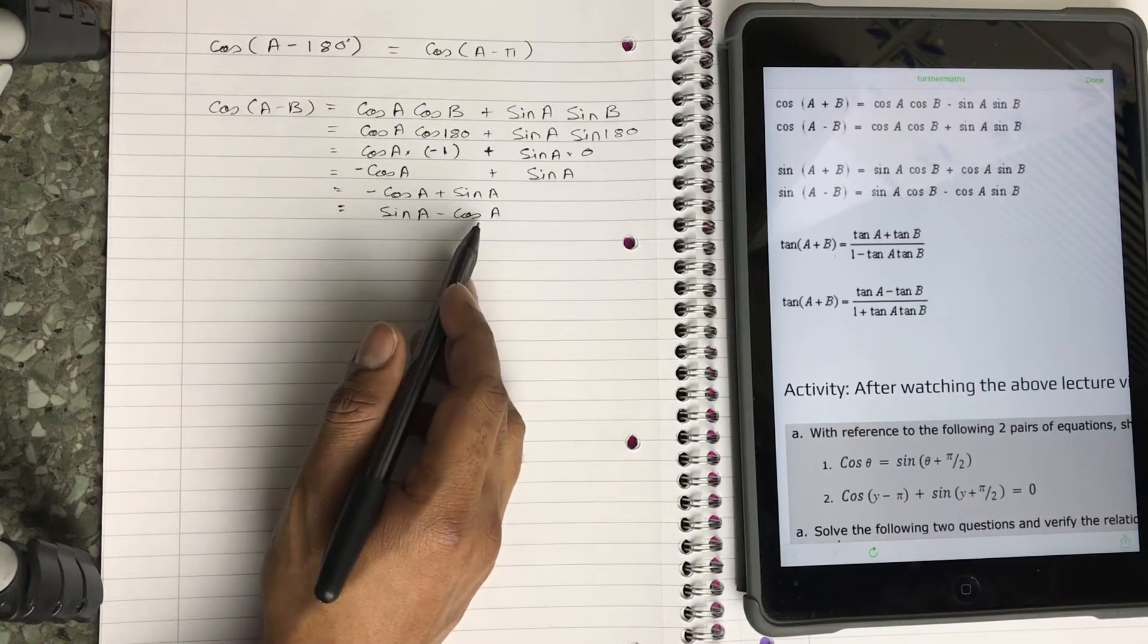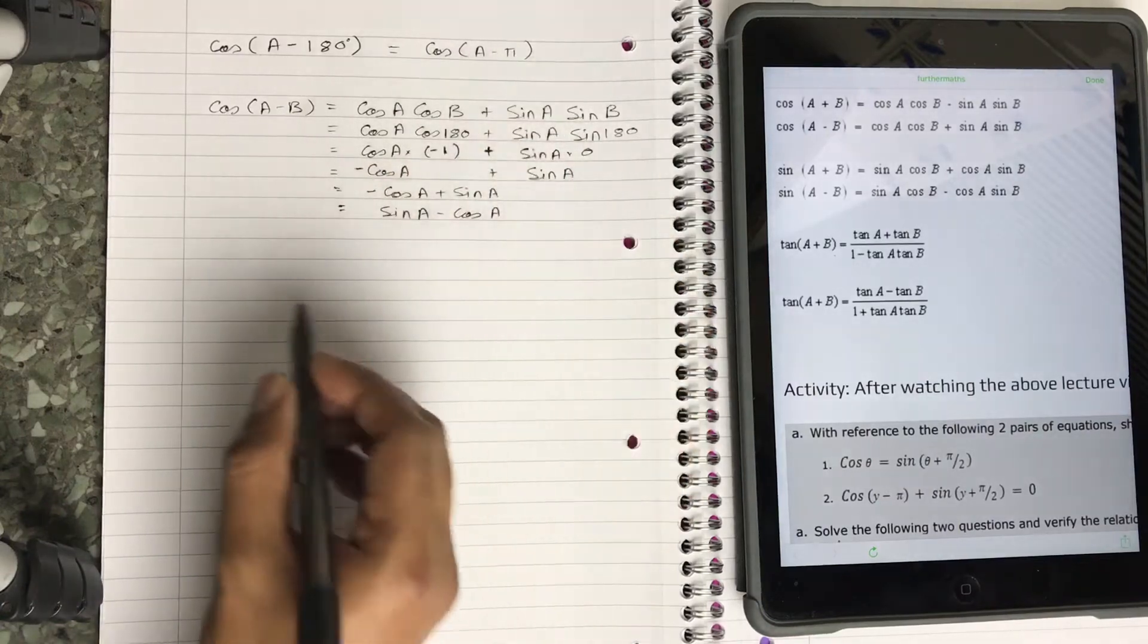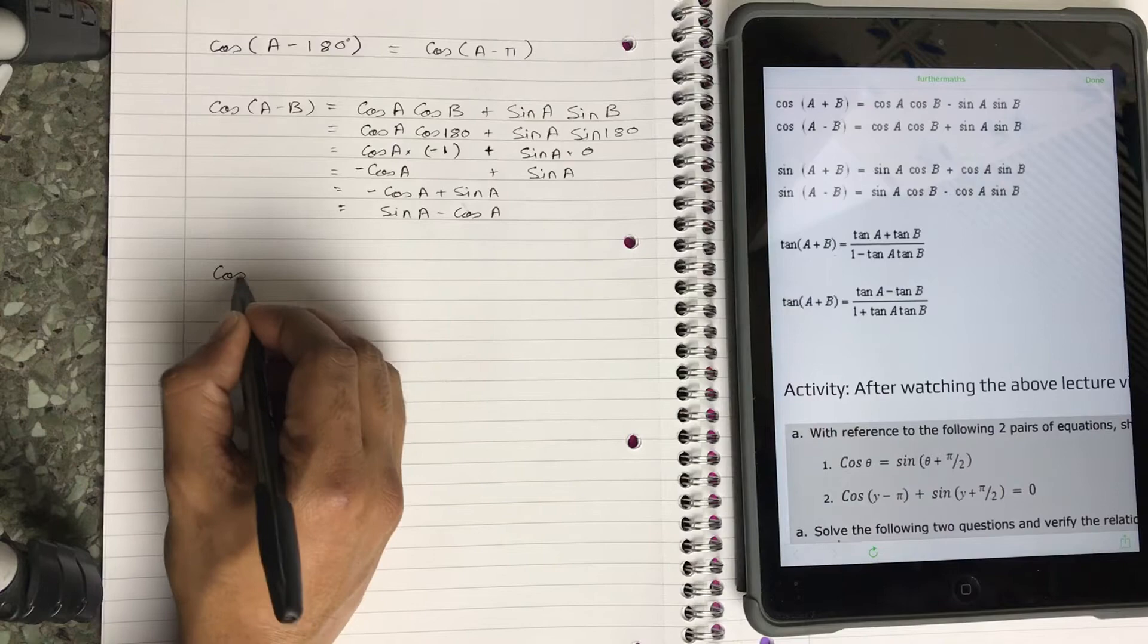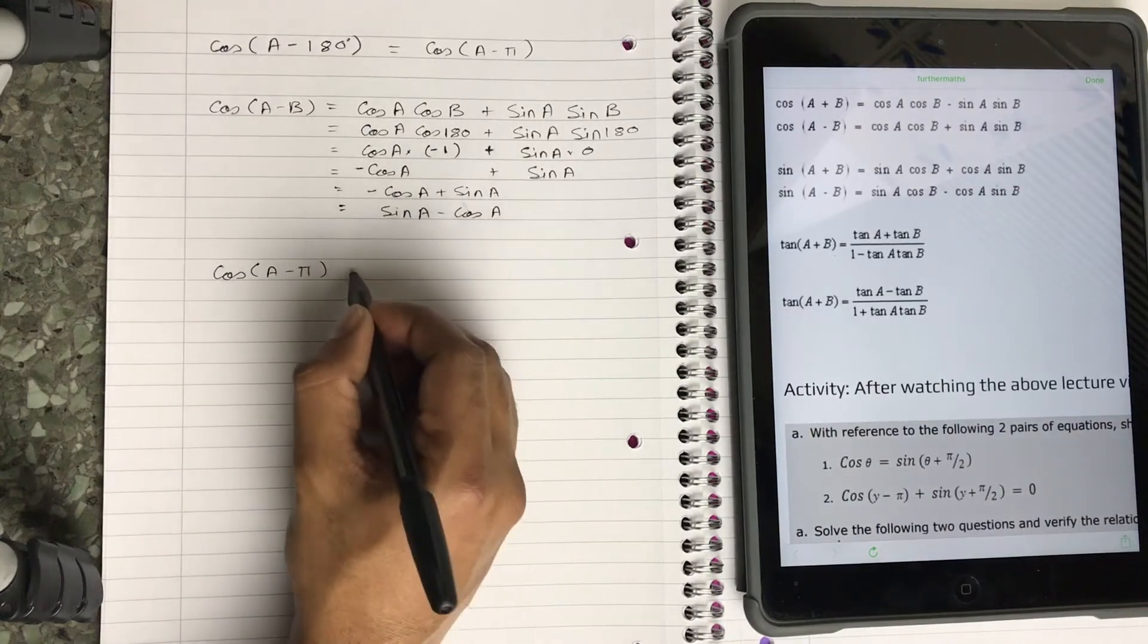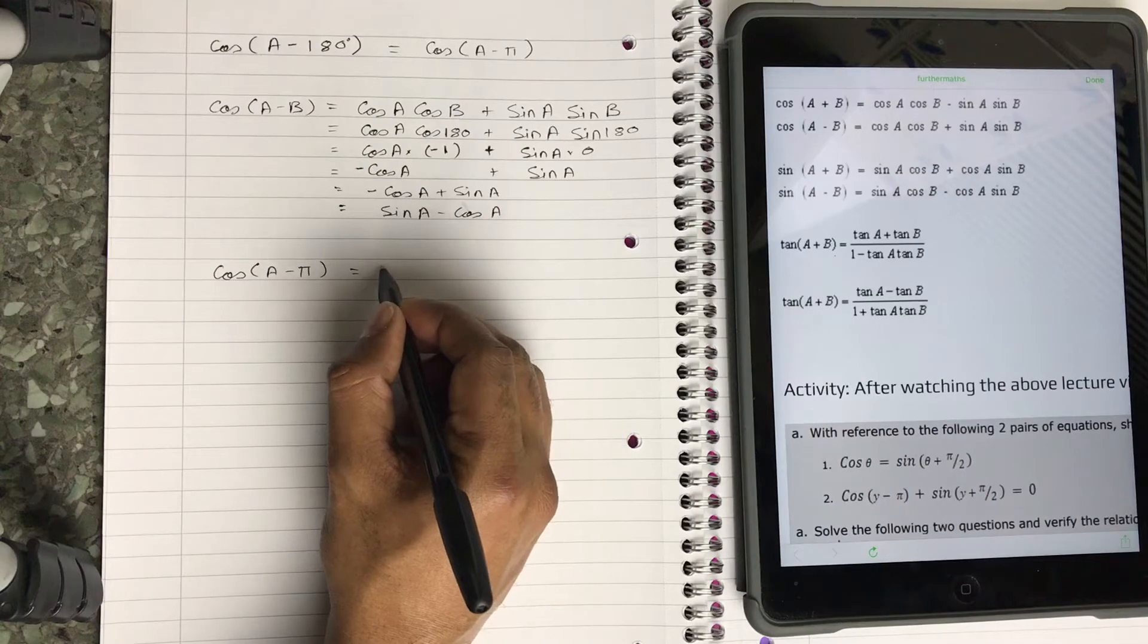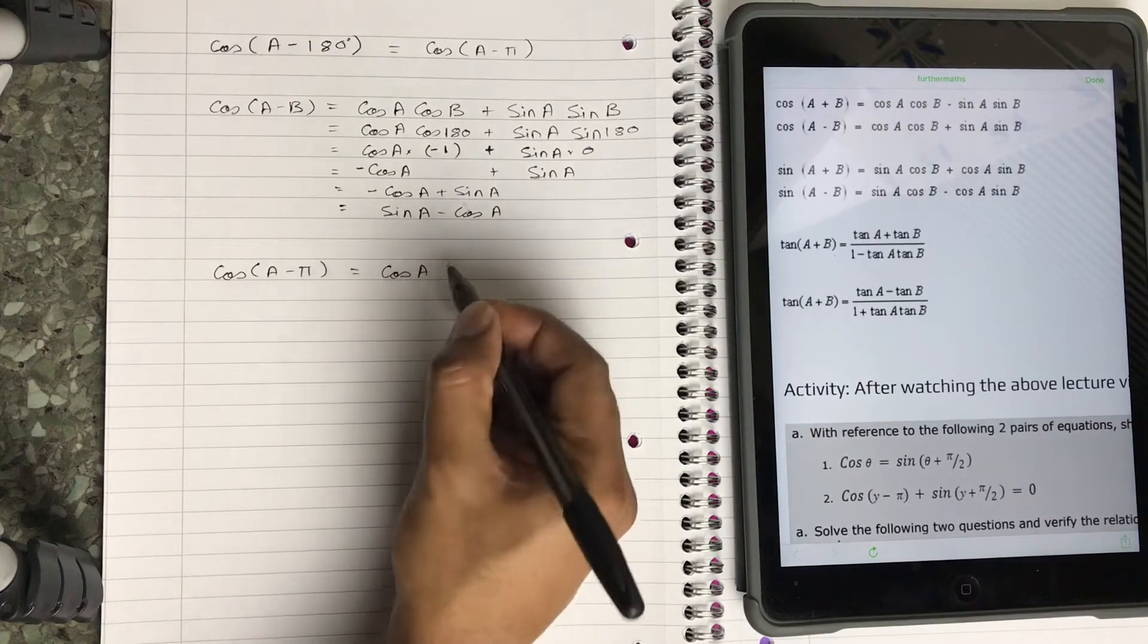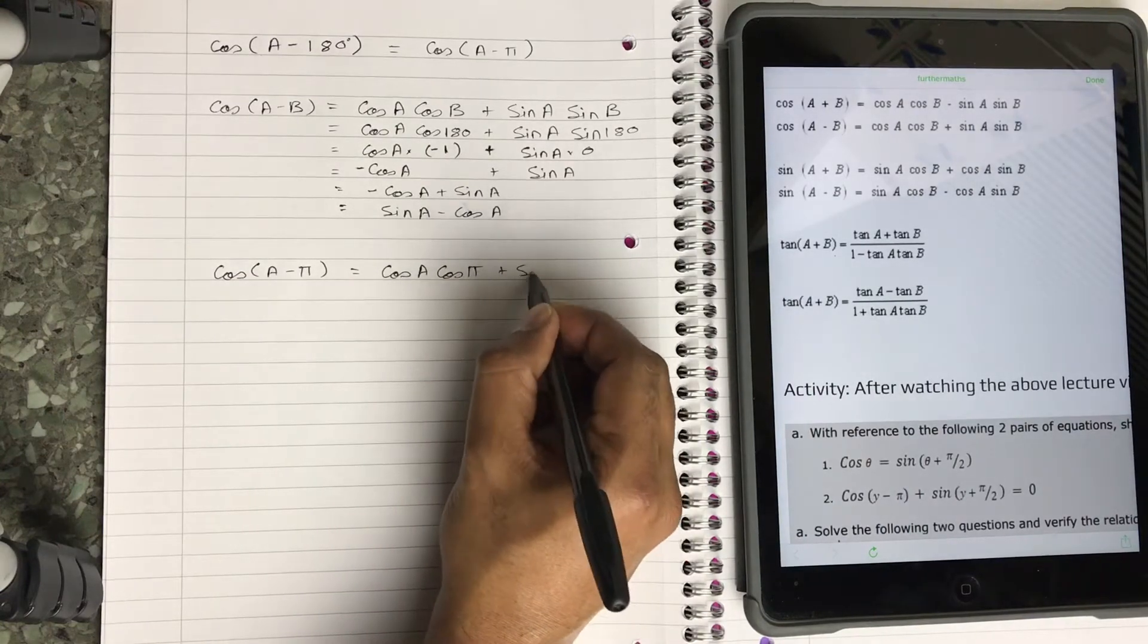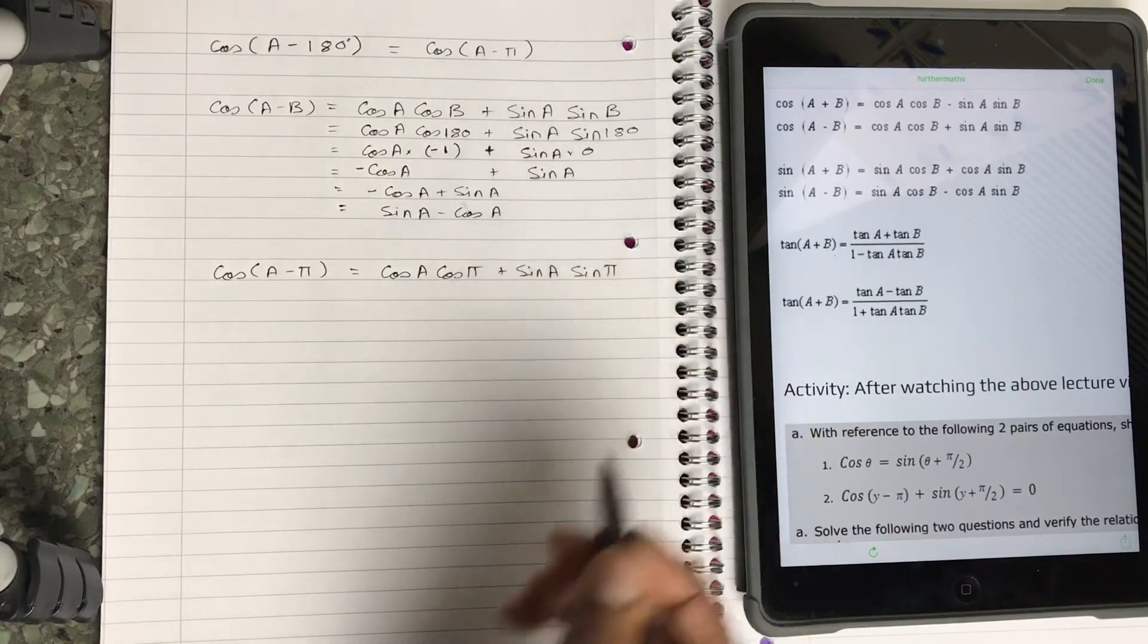Now I'm going to solve the second part: cos(A - π), which is again very similar. So cos(A - π) is going to be solved in the same way: cos(A)cos(π) + sin(A)sin(π).